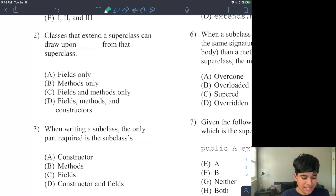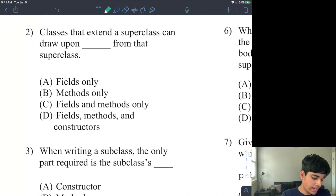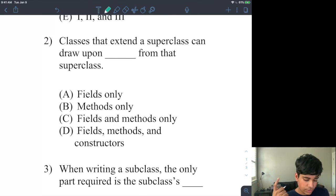Number two says classes that extend from a superclass draw upon blank from that superclass. So now we have kind of different options: field only, methods only, fields and methods, only fields, methods, and constructors. Remember everything is inherited from a superclass except for constructors. So fields and methods are correct because constructors are not drawn upon.